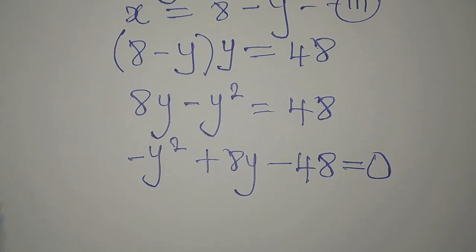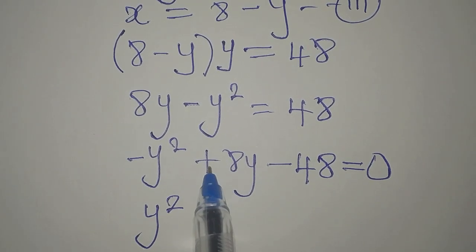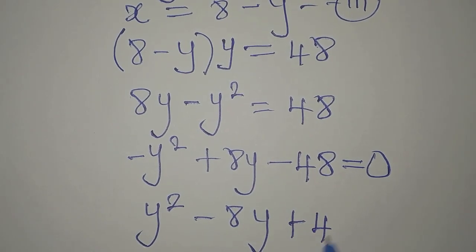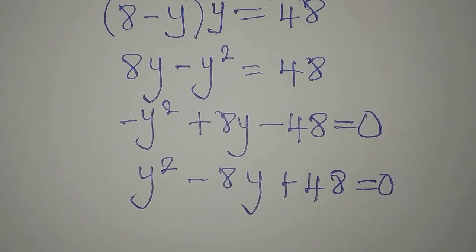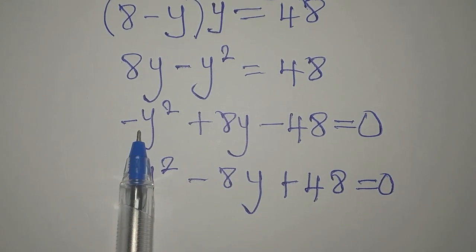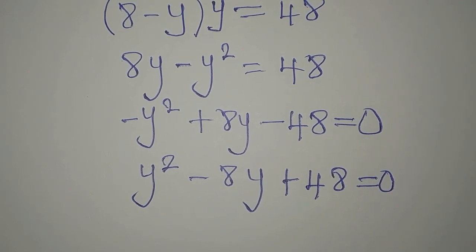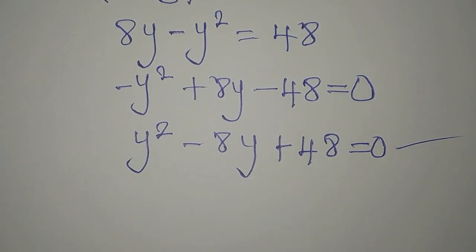Now we want to remove this negative. We get y squared, so this will turn to negative 8y, and this will turn to positive 48, and everything equals 0. All we have done is divide all the terms by minus 1, or multiply all the terms by negative 1. That is what gives us this. Now let's provide the solution to this quadratic equation.